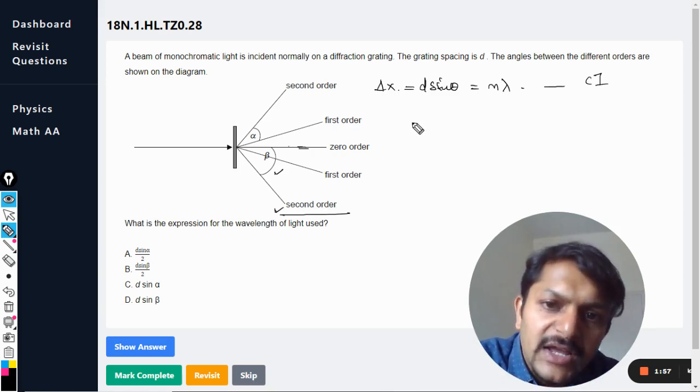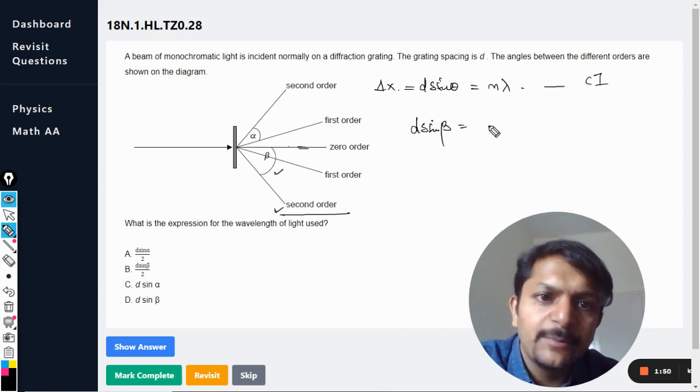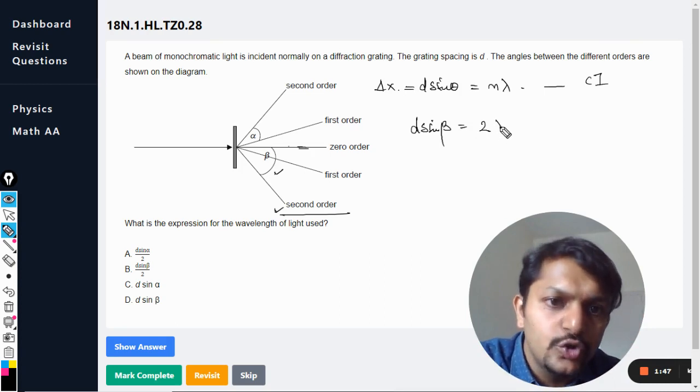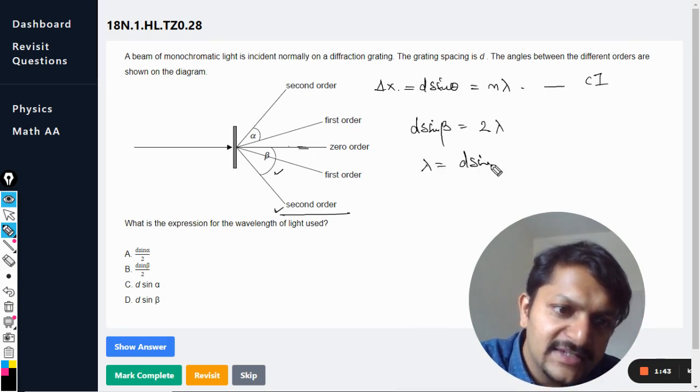So we just call it order, but what is this order? Order is basically the second maxima, no difference at all. So this is d sine beta is the angle that is taking place here, and we are talking about the second maxima, so n is equal to 2 into lambda. And thereby the wavelength is given by d sine beta divided by 2.